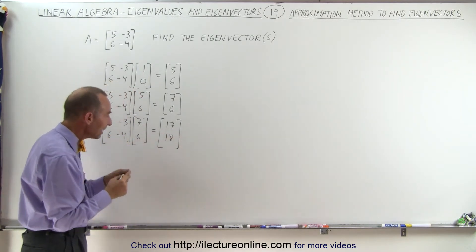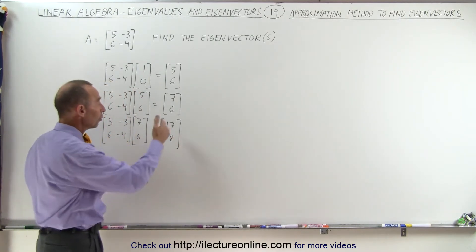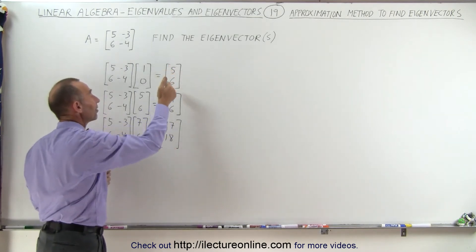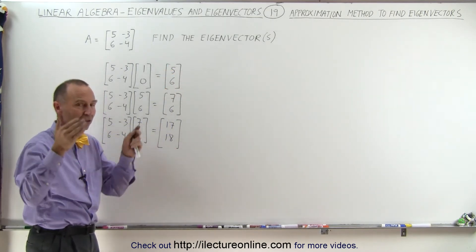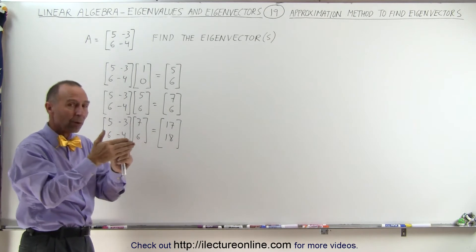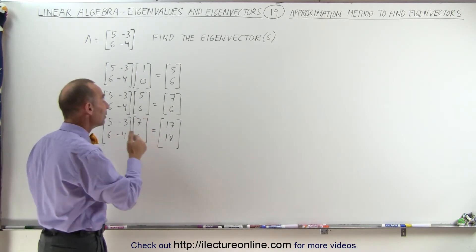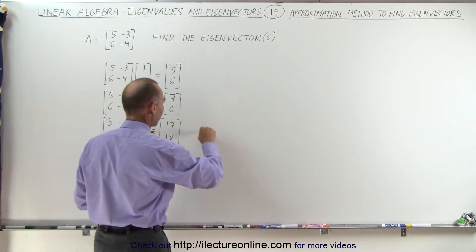Notice that 17 and 18 are much closer to one-to-one correspondence than 5, 6, and 7, 6. So it looks like it's beginning to zero in to what we think the result is, that the eigenvector is indeed 1, 1. So that's what we're suspecting.